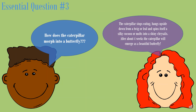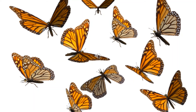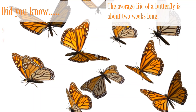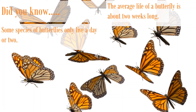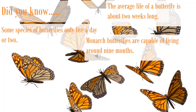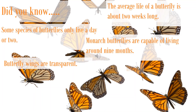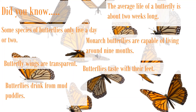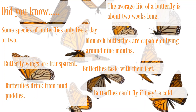Here are some fun interesting facts. Did you know that the average life of a butterfly is about two weeks? Some species of butterflies only live a day or two. Monarch butterflies are capable of living around nine months. Butterfly wings are transparent. Butterflies taste with their feet and drink from mud puddles. Did you also know that butterflies can't fly if they're cold? Thanks for watching, hope you enjoyed!